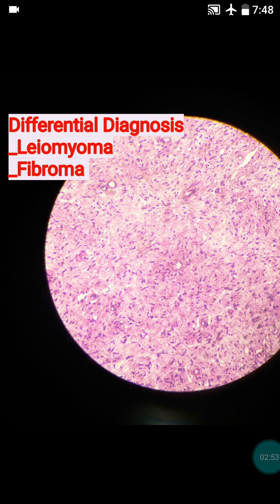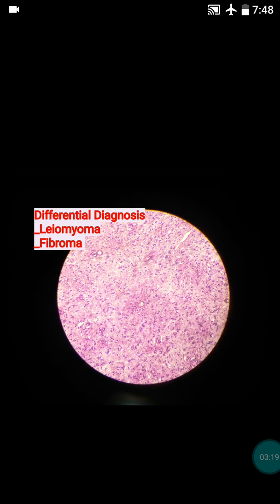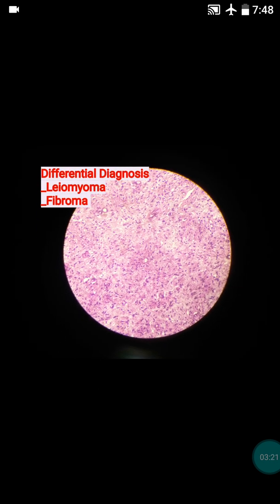Fibroma can be differentiated because it has a very high amount of collagen, and there is a presence of rolled arrangements such as herringbone patterns and storiform patterns. There is at least some amount of pleomorphism, and there is presence of mitosis — like one to three mitoses per 10 high power fields. That is regarding fibroma.